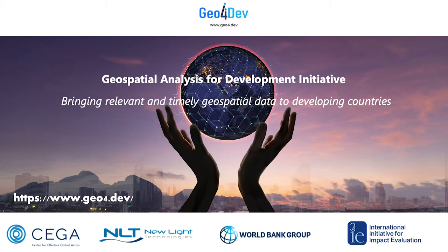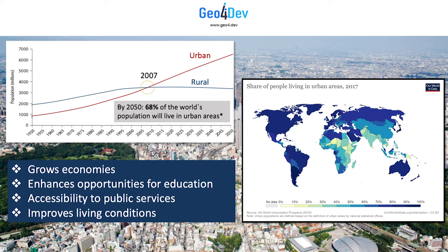Our world is rapidly changing in almost every dimension. In 2007, for the first time in history, the global urban population exceeded the global rural population, and many countries, especially in the developing world, are continuing to rapidly urbanize. It is projected that by 2050, nearly 70% of the world's population will live in urban areas.